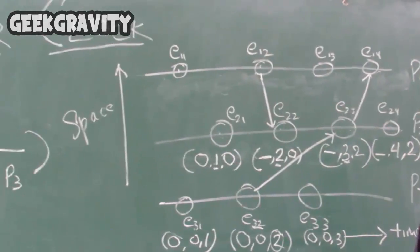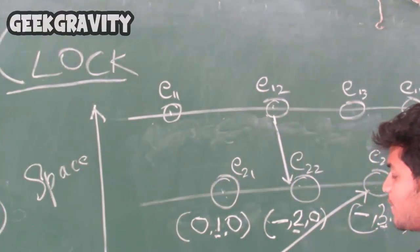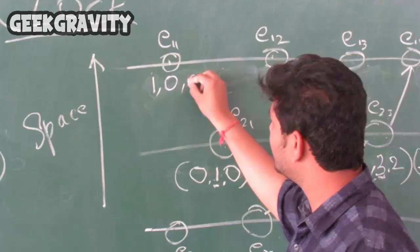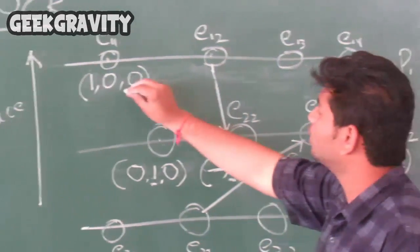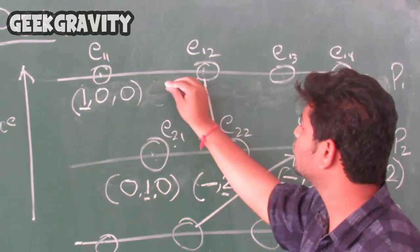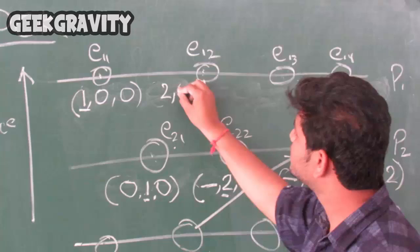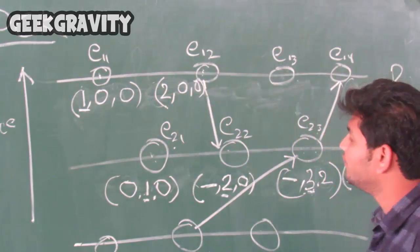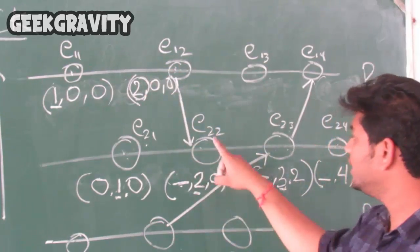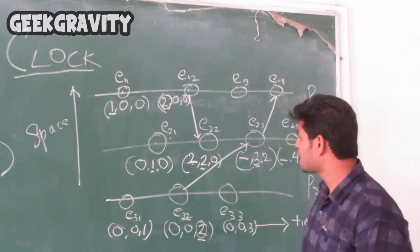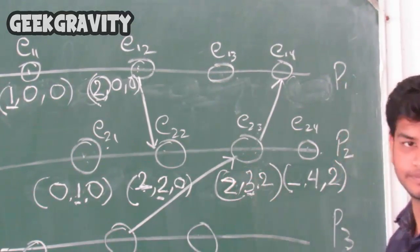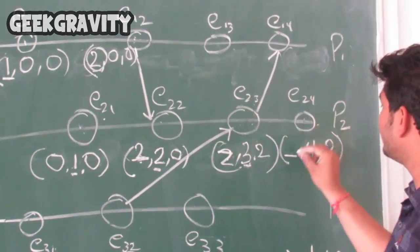Now let us come to process P1. For E11, there is no message passing from P2 or P3, so it will be 1 for process 1, 0 for process 2, and 0 for process 3. For E12, there is a successive moment from E11, so we increment the P1 component from 1 to 2, giving 2, 0, 0. Now we had left E22's first bit blank — since E12's P1 value is 2, we copy 2 there, so E22 becomes 2, 2, 0. Similarly we copy 2 into E23 making it 2, 3, 2, and copy 2 into E24 making it 2, 4, 2.